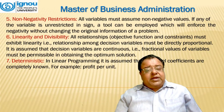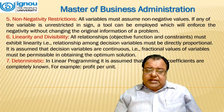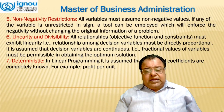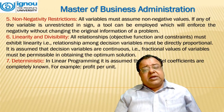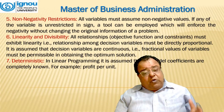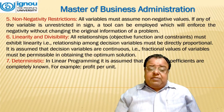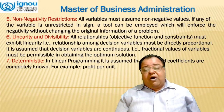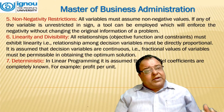Linearity and divisibility: all relationships — objective function and constraints — must exhibit linearity, meaning the relationship among decision variables must be directly proportional. Decision variables are assumed to be continuous, so fractional values are permissible in obtaining the optimal solution. Deterministic study: in linear programming, it is assumed that all model coefficients are completely known — for example, profit per unit.